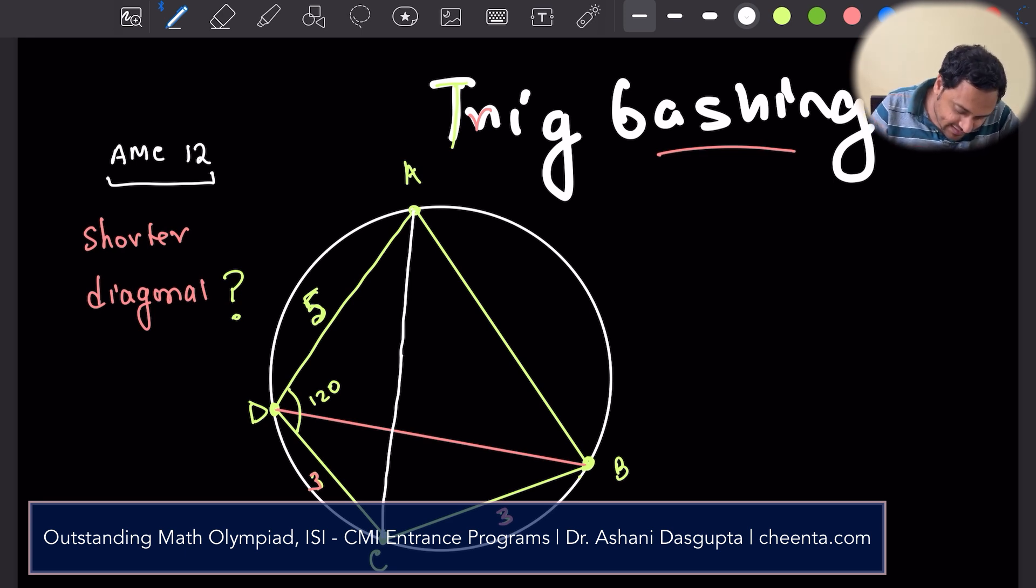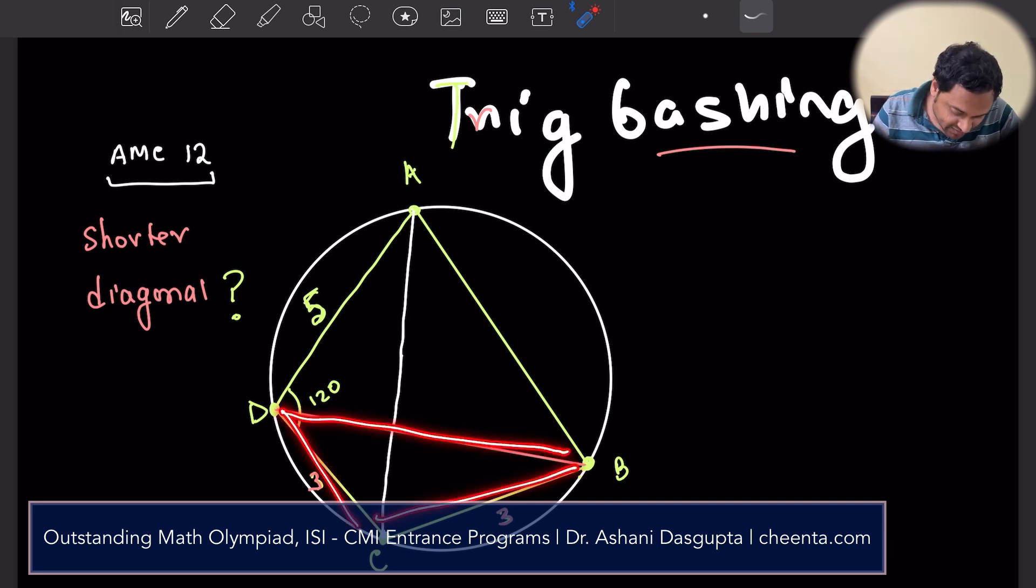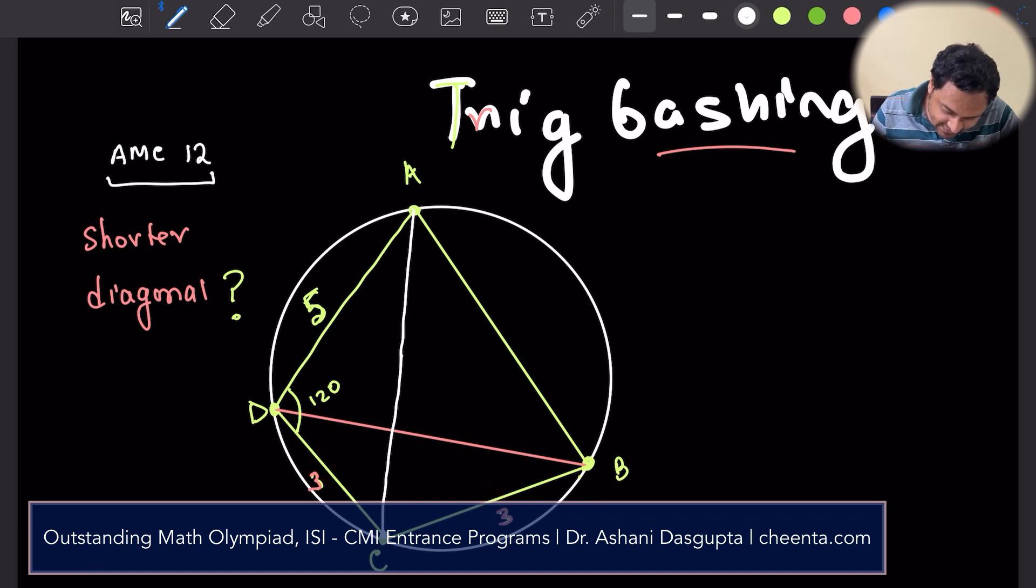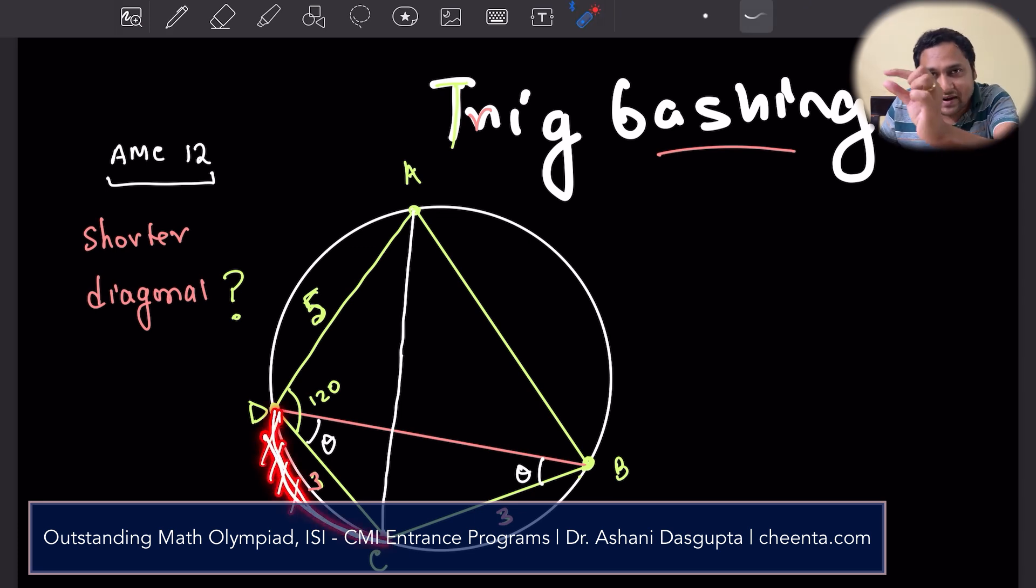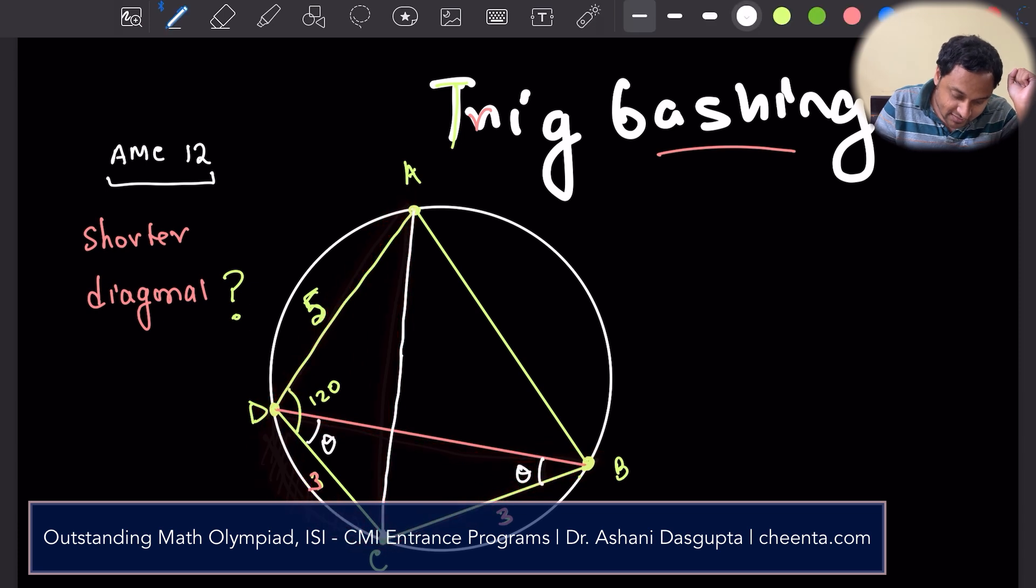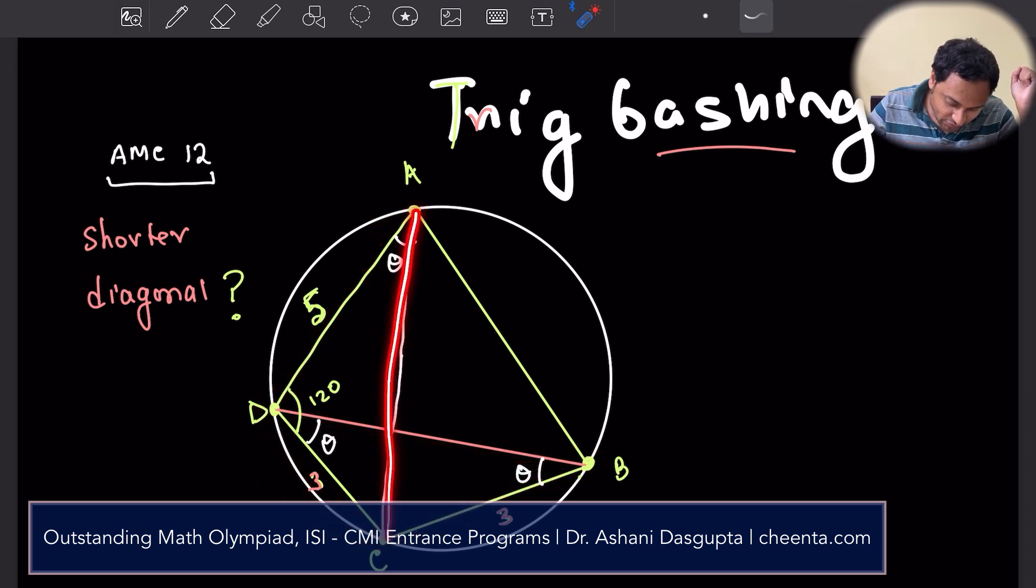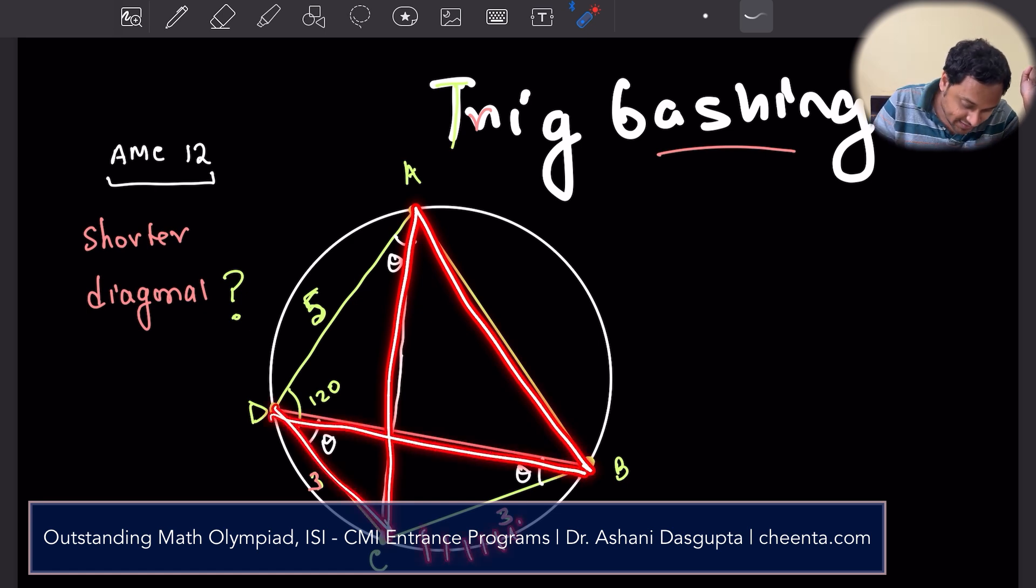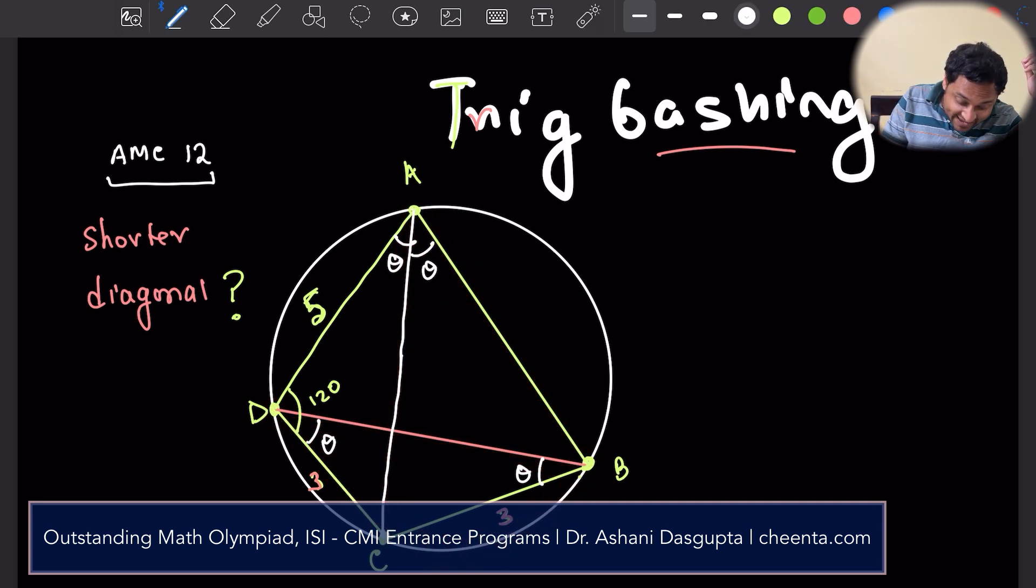So first notice that this is an isosceles triangle because these two sides are equal. So let's call this angle theta, then this is theta, and then we can use the property of cyclic quadrilaterals that angles in the same arc, angles subtended by the same arc are equal. So this arc subtends this angle at the circumference. Similarly, it subtends this angle. So this is also theta. Similarly, this is also theta because both of them are subtended by this arc BC. So this is also theta. So fun fact, AC is the angle bisector of angle A. It's crazy.